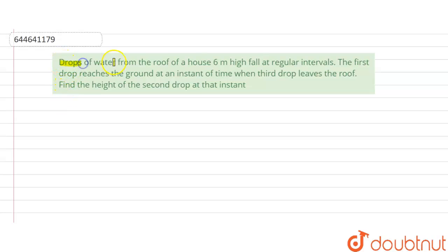Drops of water from the roof of a house 6 meters high fall at regular intervals. The first drop reaches the ground at an instant of time when the third drop leaves the roof.